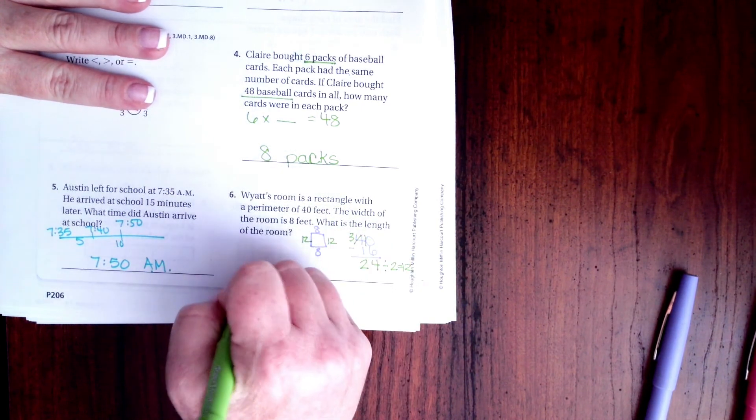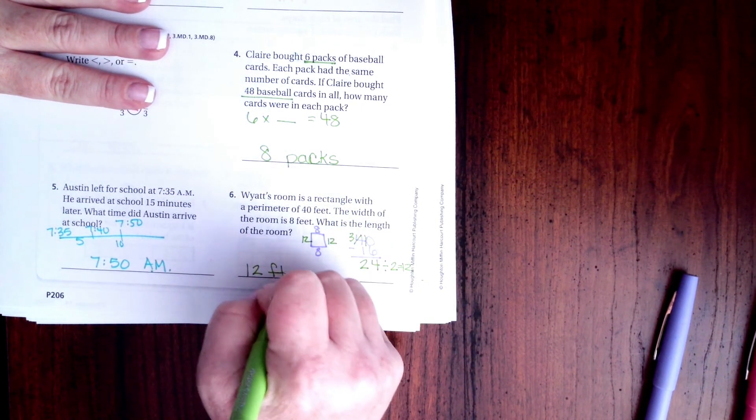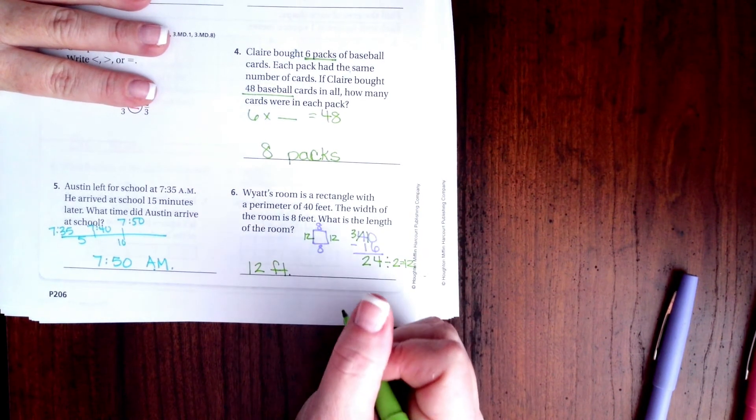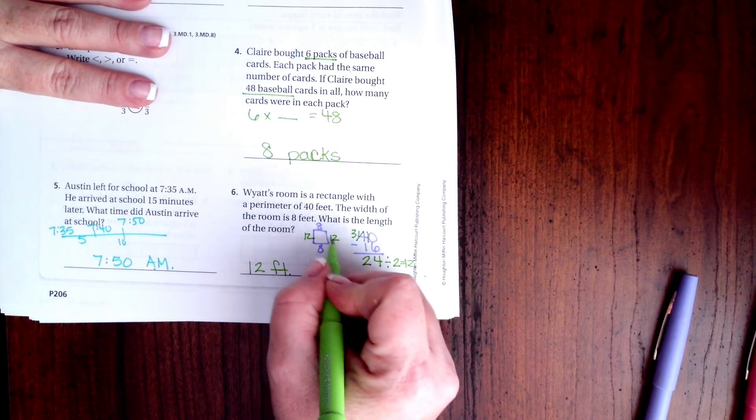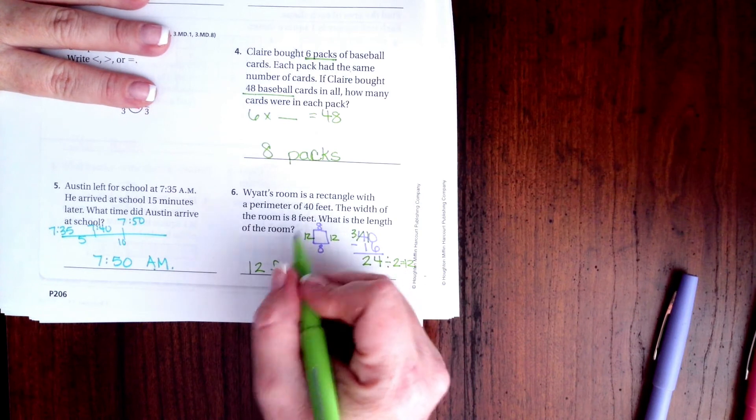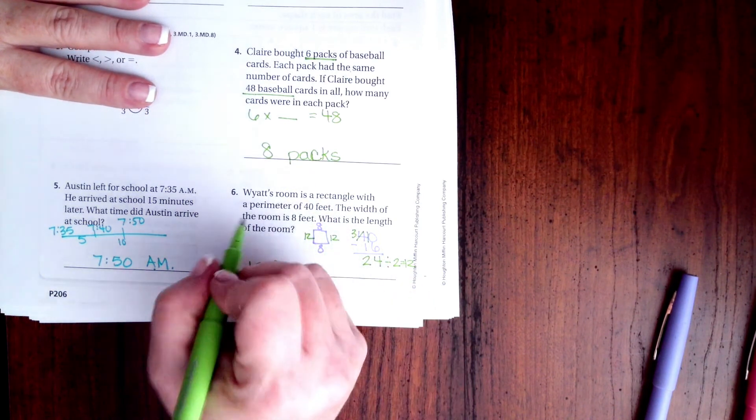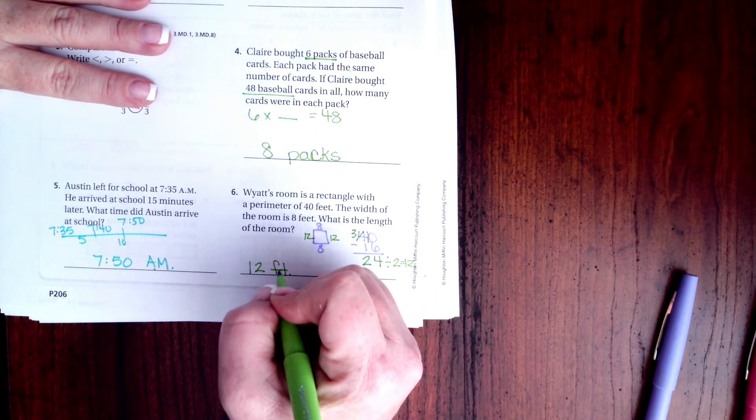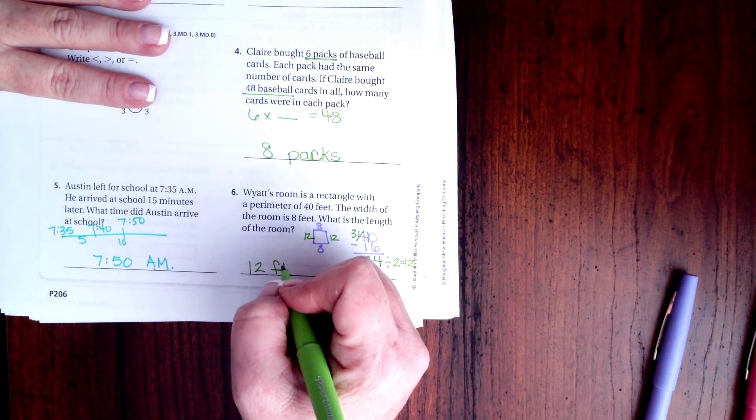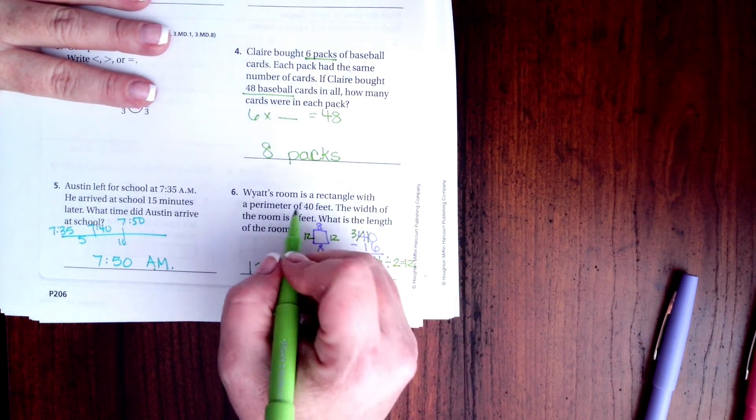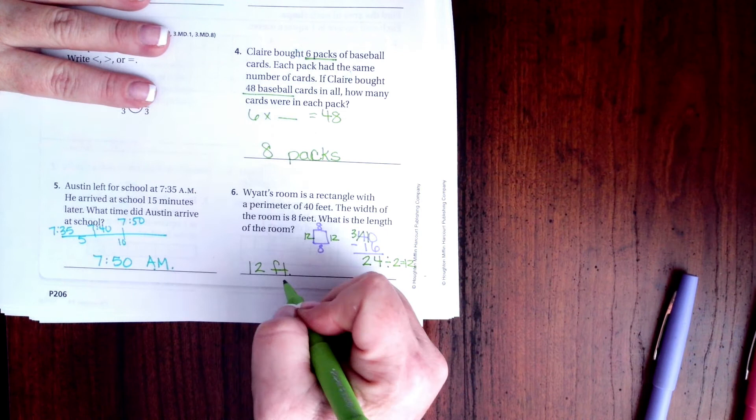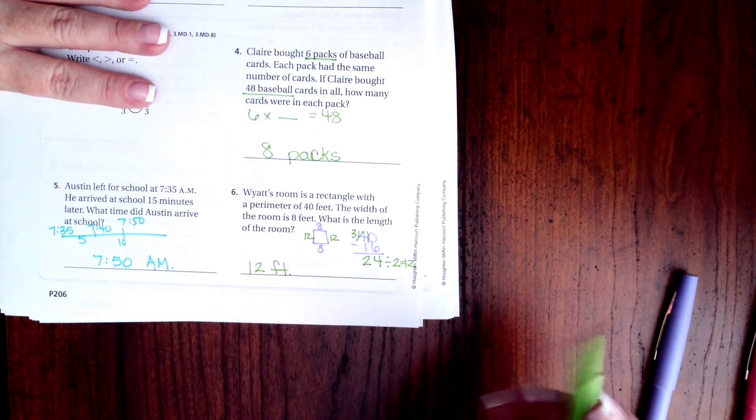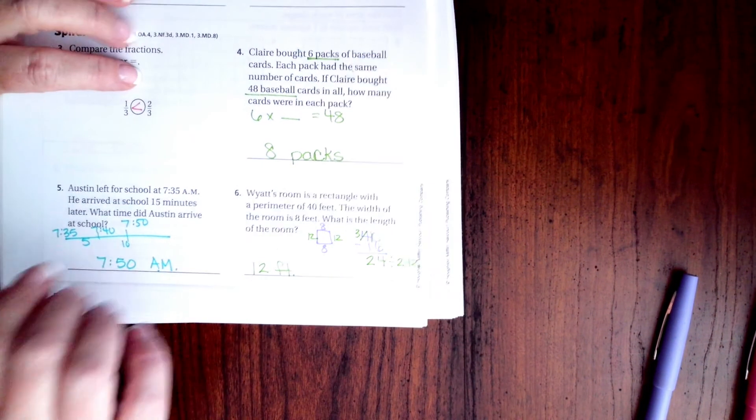So it's going to be 12 feet. Now it is not 12 feet squared because we did not multiply the sides together, we added them to find the perimeter. Area is feet squared or whatever unit squared. Perimeter is just the unit, in this case feet. All right guys, thanks for hanging out for 11.6. Come on back for 11.7. See you soon!